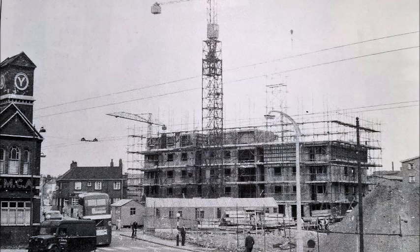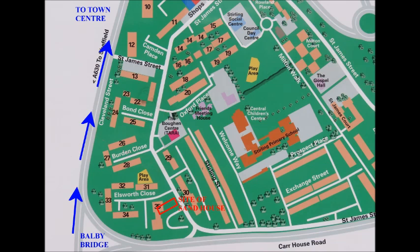All the photos in this video were taken within a quarter of a mile of the Sandhouse. We're going to start by travelling from Balby Bridge towards Doncaster Town Centre, following the blue arrows on this map. Near the bottom of the map, you'll see a red rectangle marking where the Sandhouse used to stand.